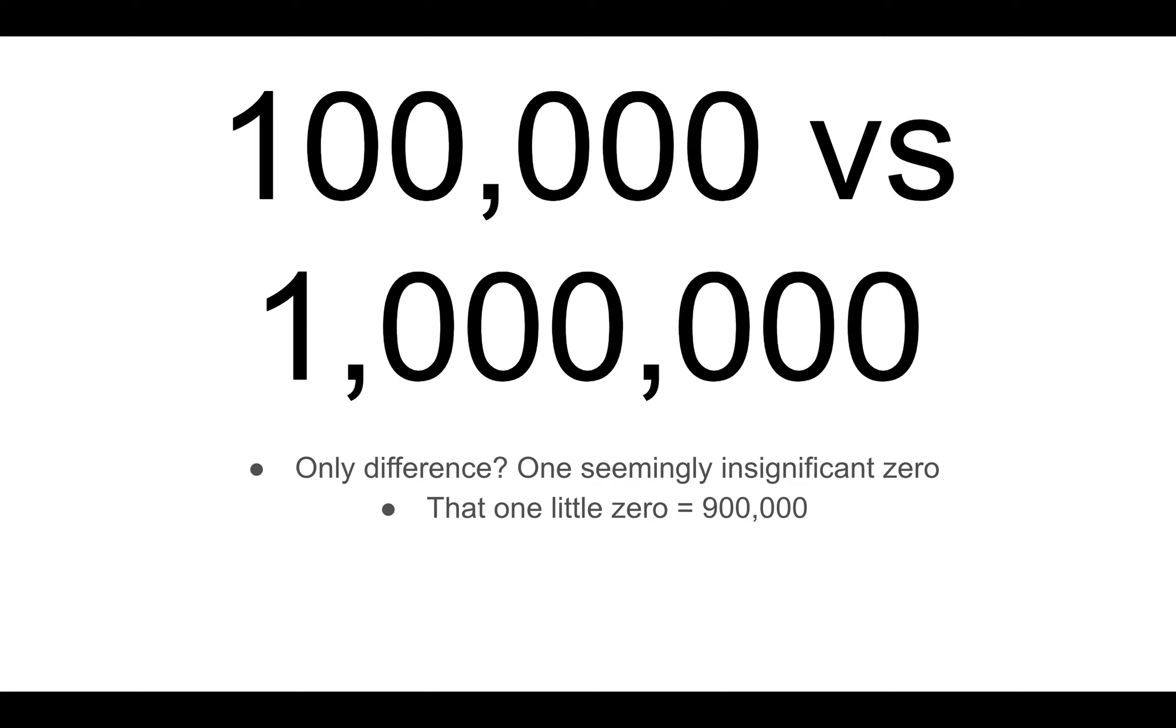So I encourage you to think about this example in terms of like a banking example. Consider that difference, that little mistake of leaving off one zero would equal 900,000.